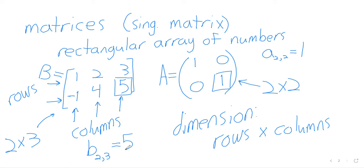Matrices are used everywhere in computer programming. An image file is going to be stored as a matrix where the row and column identify pixels, and then there's a color code as an entry that tells you how that pixel should be colored. In a grade book, you have names and all the assignments, and that's being stored internally as a matrix.